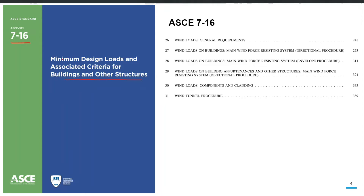ASCE 7 previously had versions ASCE 7-05, then 7-10, and now we have 7-16. ASCE 7-22 is already available, but for this particular demonstration I will be using the 7-16 version, as I am currently not familiar with the changes made in the wind load calculation procedure in ASCE 7-22.